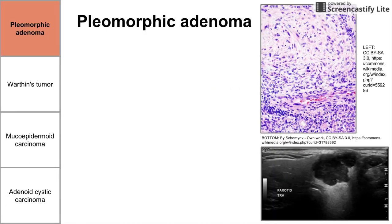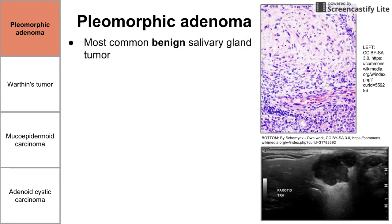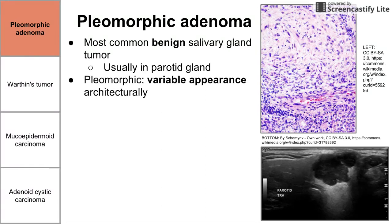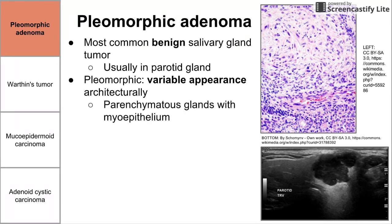Let's start with pleomorphic adenoma. Pleomorphic adenoma is the most common benign salivary gland tumor. It's usually found in the parotid gland, which is the salivary gland that's up in your cheeks. Pleomorphic means it has a variable appearance architecturally, and there are essentially two sections: a parenchymal gland and a stroma. You can kind of see those two sections in the top image on the right.